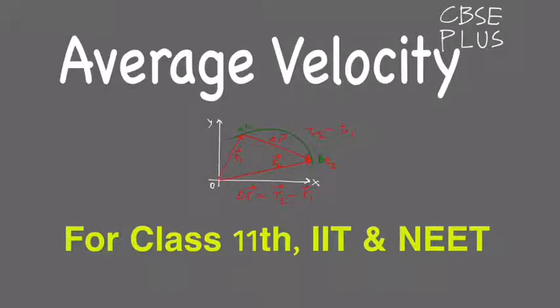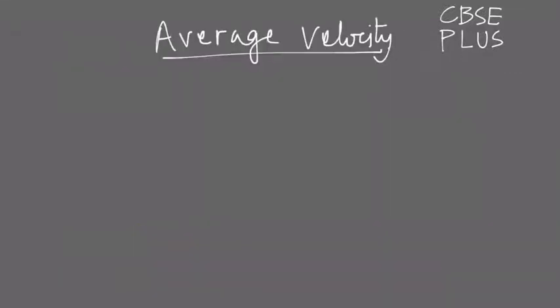To know the average velocity of any object, we need simply two things: first is the displacement and second is the time. To understand it, we can check the graph of a moving object, and using that graph we'll understand the concept of average velocity. Since velocity is a vector quantity, it has direction along with the magnitude.